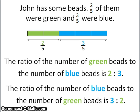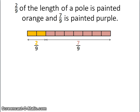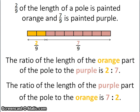Let's look at another example. Two-ninths of the length of a pole is painted orange and seven-ninths is painted purple. So the ratio of the length of the orange part of the pole to the purple part is 2 to 7. Or the other way around, the purple part to the orange part is 7 to 2.